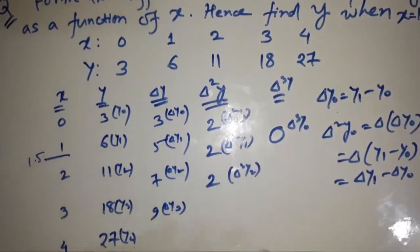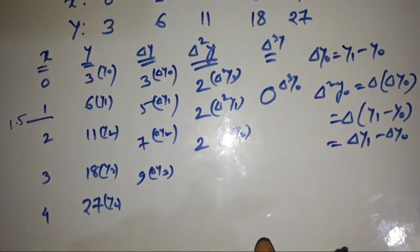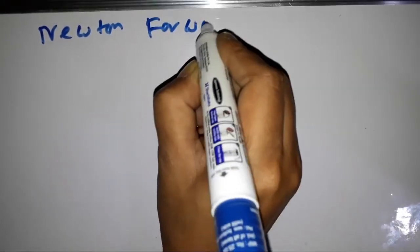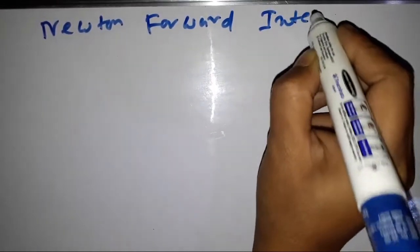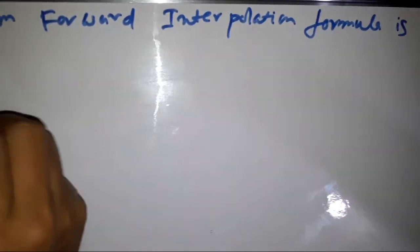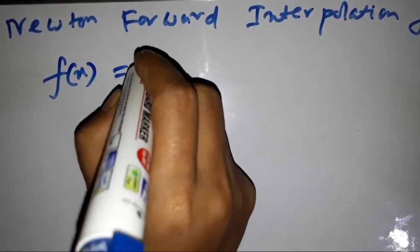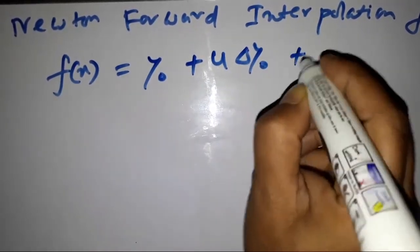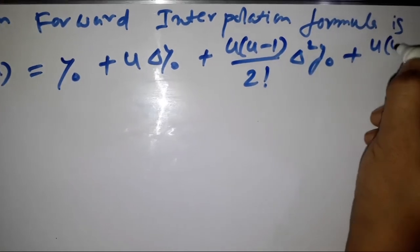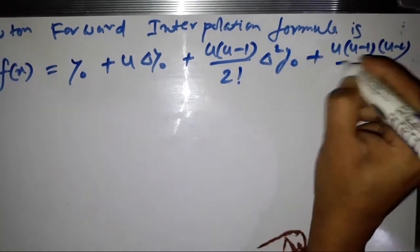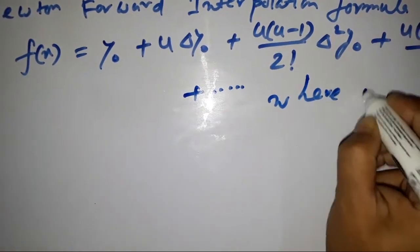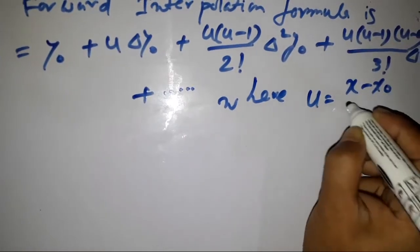The Newton forward interpolation formula is: f(x) = y₀ + u·Δy₀ + [u(u−1)/2!]·Δ²y₀ + [u(u−1)(u−2)/3!]·Δ³y₀ + … where u = (x − x₀) / h.